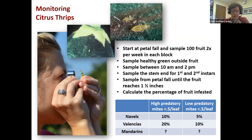Monitoring citrus thrips — this is the hardest part for pest control advisors. You start at petal fall and sample 100 fruit a couple of times a week in each block because things can change really rapidly. Choose healthy green outside fruit. Sample between 10 a.m. and 2 p.m. because that's when the thrips are active. Sample the stem end for first and second instars. Sample from petal fall until the fruit reaches one and a half inches. It's a very intensive time of year. From that you can calculate the percentage of fruit that's infested.